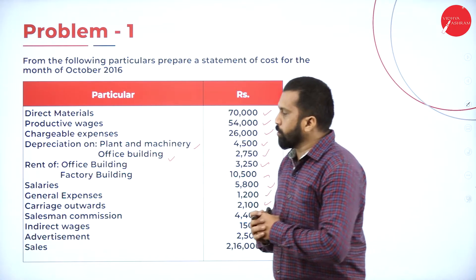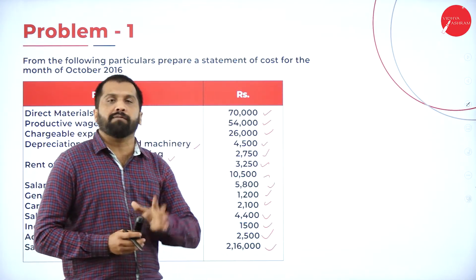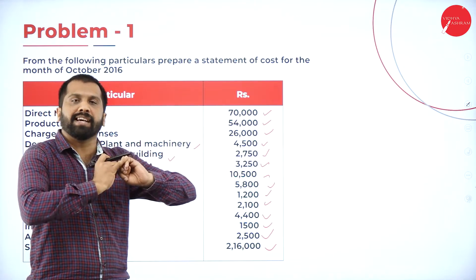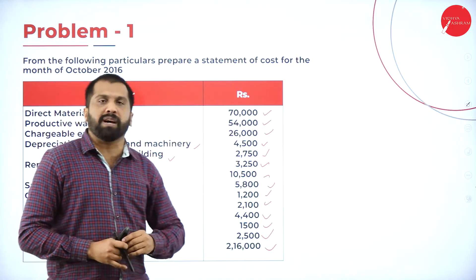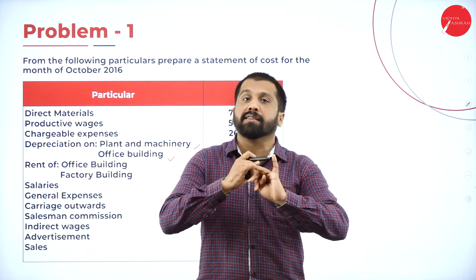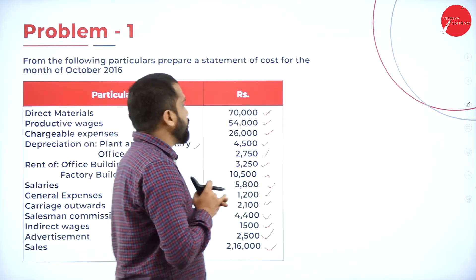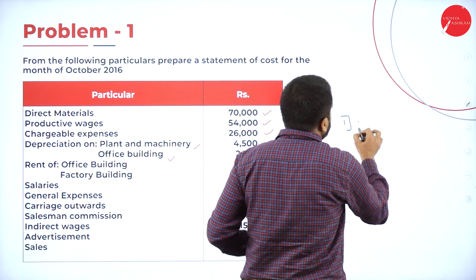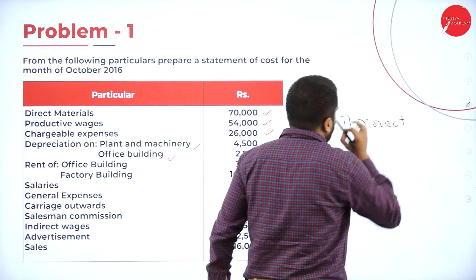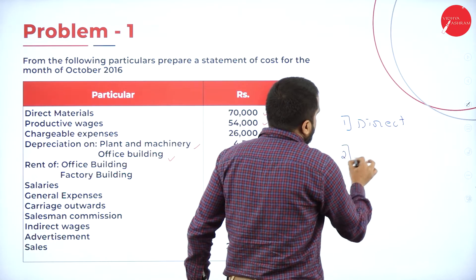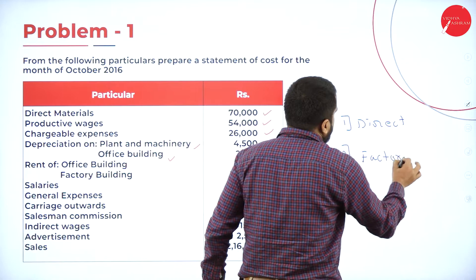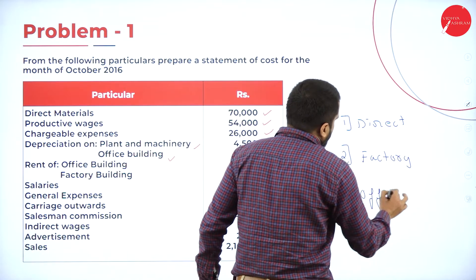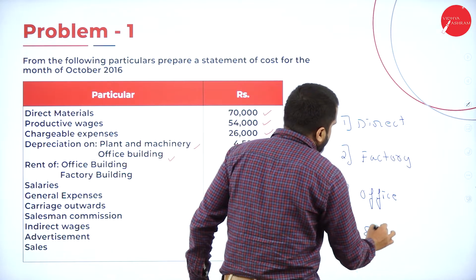Before I go to the problem, I will bifurcate. As I told you, there are 4 steps: Direct, Factory, Office, and Selling and Distribution. We have to bifurcate which item comes under first, second, third, or fourth. The first one is Direct — like your prime cost. The second one is your Factory overhead. The third one is Office and Administration overhead. The fourth one is Selling and Distribution overhead. Total four heads.